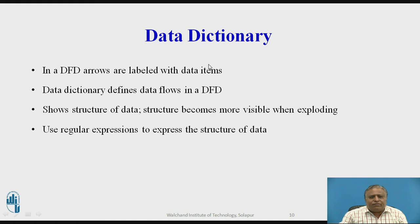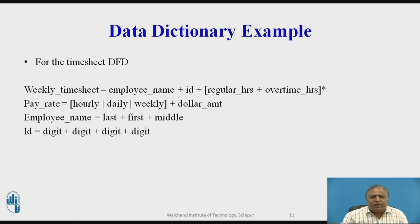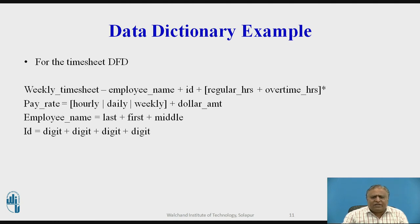Next is the data dictionary. In a DFD, arrows are labeled with data atoms. The data dictionary defines data flows in DFD and shows the structure of data — structure becomes more visible when exploiting regular expressions to express that structure. For example, in a timesheet DFD: weekly timesheet equals employee name plus ID plus regular hours plus overtime, multiplied by pay rate, equal to hourly or weekly dollar amount. Employee name equals last name plus first name plus middle name. ID is a four-digit number. The data dictionary is essentially a data repository where all data can be stored.